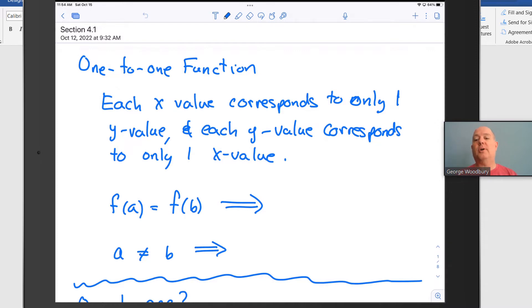A one-to-one function is a function that satisfies the definition of a function but also has some other requirements. Namely, each x value can only be associated with one y value, and that's the definition of a function, and each y value can only be associated with one x value. That's the one-to-one part.